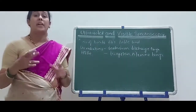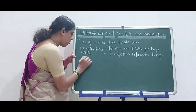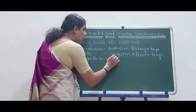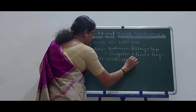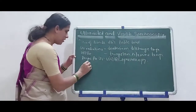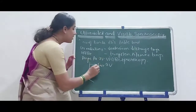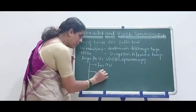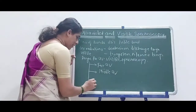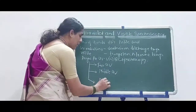First of all, we will see the range for UV-visible spectroscopy. This range consists of three parts: first is near UV, second is middle UV (also called main UV), and third is far UV.